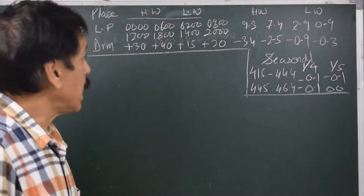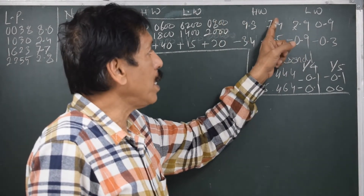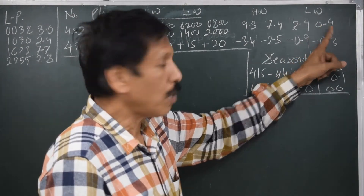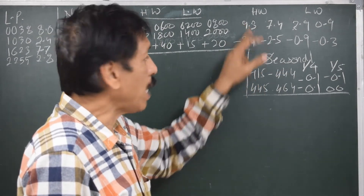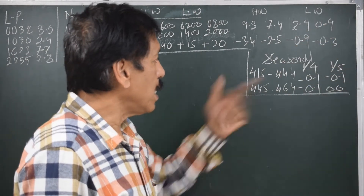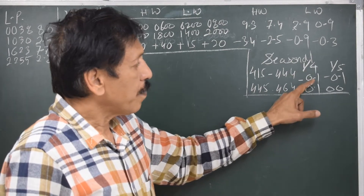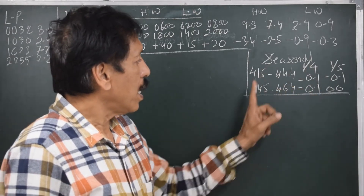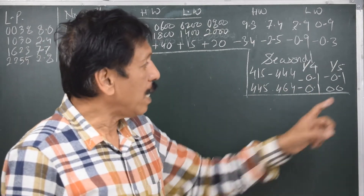Port 452 is Liverpool and port 420 is Drumor. The mean high water springs and mean high water neaps heights are 9.3 and 7.4 metres respectively. Mean low water neaps is 2.9 and mean low water springs is 0.9 metres. The corresponding height differences for Drumor are: minus 3.4 for 9.3, minus 2.5 for 7.4, minus 0.9 for 2.9, and minus 0.3 for 0.9. The seasonal correction for ports 415–444 and 445–464 is minus 0.1 on the 1st of April, and either minus 0.1 or nil on the 1st of May.